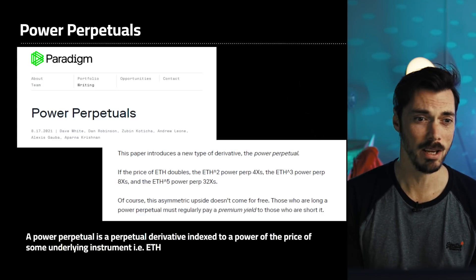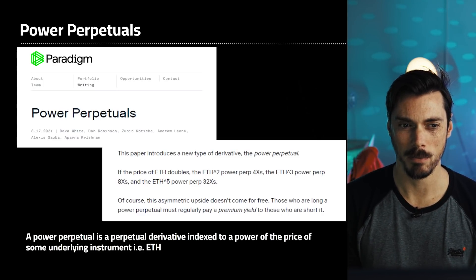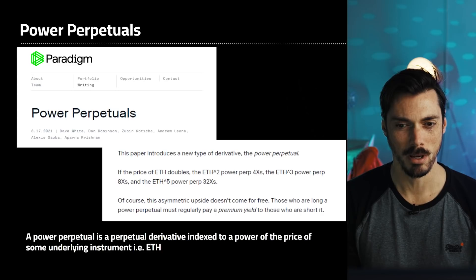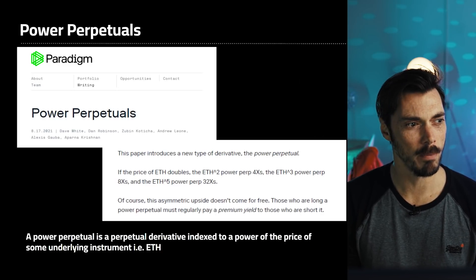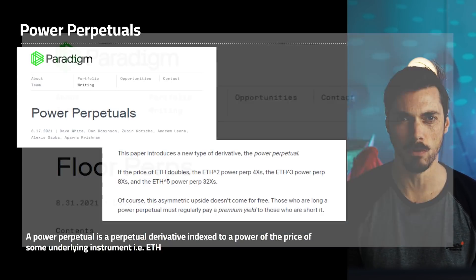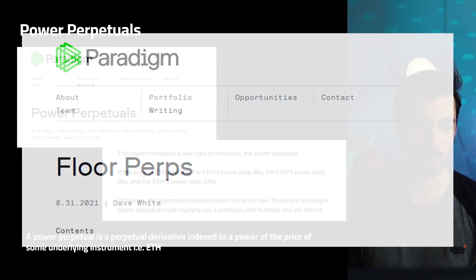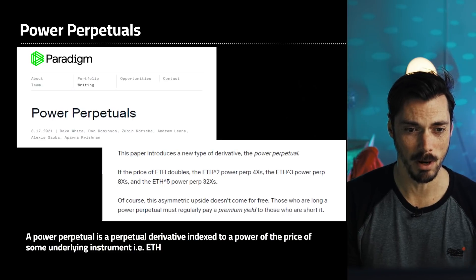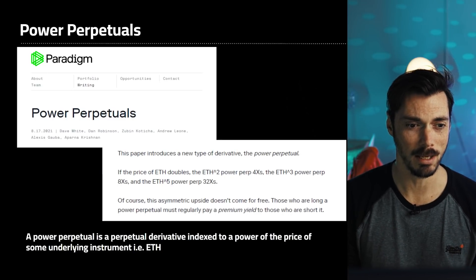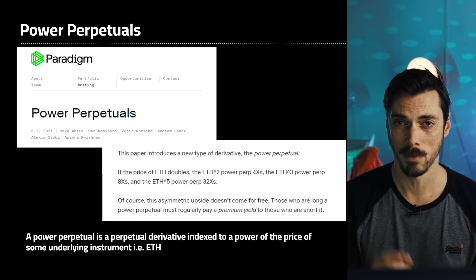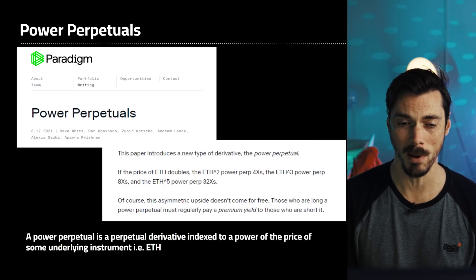Where it comes from is Paradigm. They have written some really interesting papers on protocols and potential primitives. They wrote one about a perpetual floor for NFTs which was really interesting. They wrote this one in August — the team of Dave White, Dan Robinson, Zubin Khadija, Andrew Leone, Alexis Galba, and Aparna Krishnan — introducing a new type of derivative for options called the power perpetual.